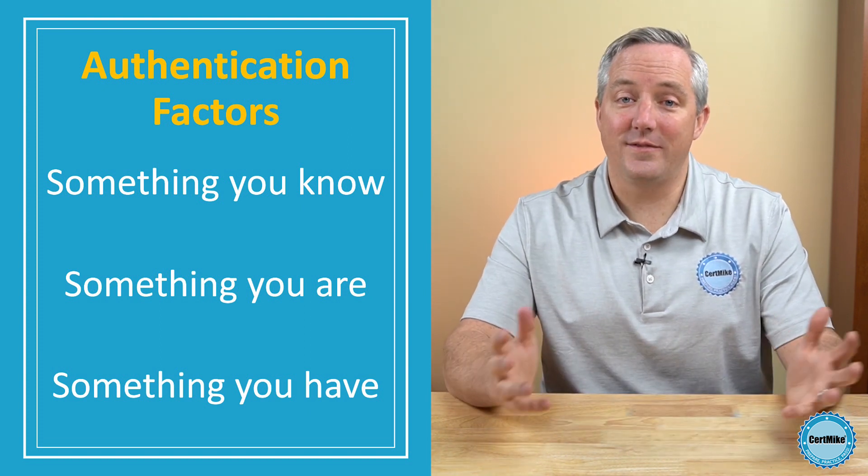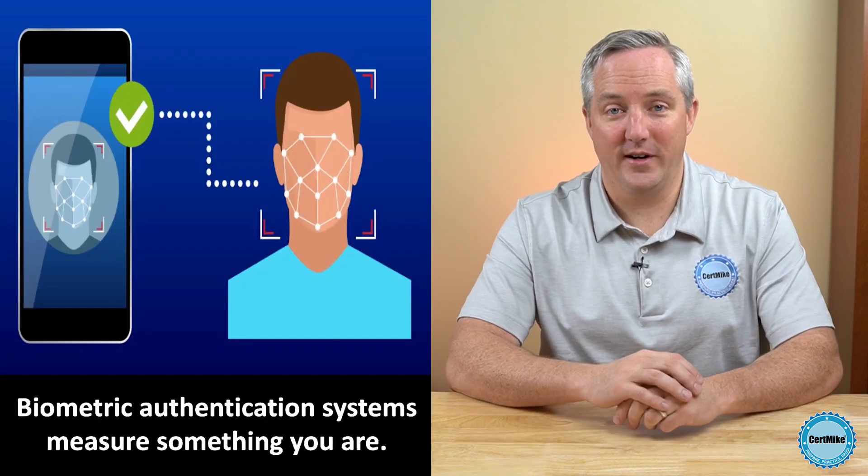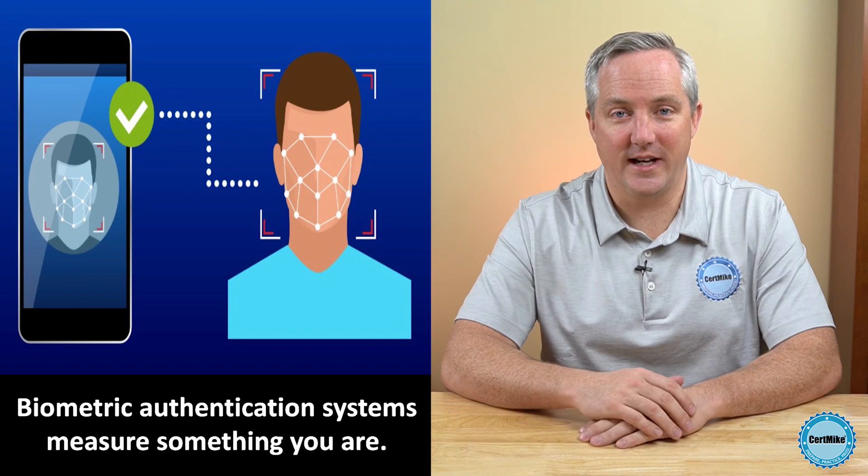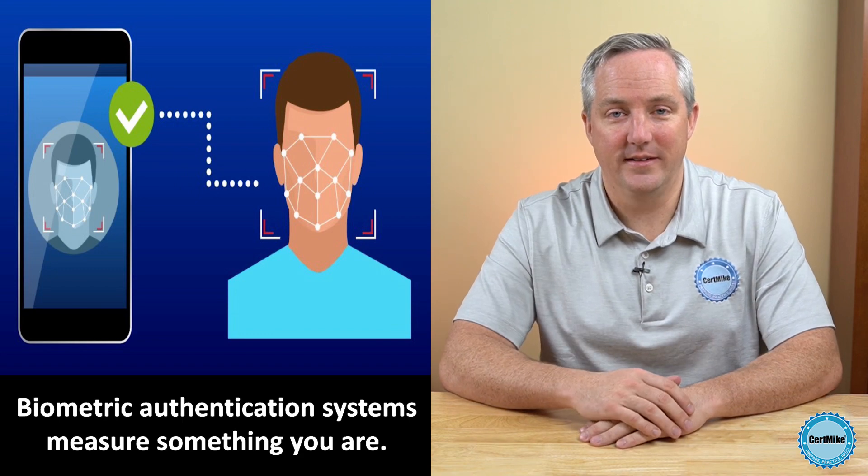Today we're going to dive deeper into the second category — something you are — which is also known as biometric authentication. When we're performing biometric authentication, the systems that we use sometimes make mistakes. It might be that your fingerprint is a little smudged, you've gained a little weight, or even that you've combed your hair differently. Our biometric characteristics change over time, and systems need to have a little wiggle room in them as they identify us.